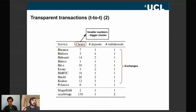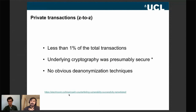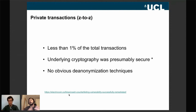Now let's go to the most Zcash-specific part. The most private transactions — those operating entirely within the shielded pool — were less than 1% of total transactions. This is a very important key point: the most private part of Zcash was by far the least used. There are various reasons for this. The underlying cryptography when we did our paper was presumably secure, and we made no effort to break it since this was not a cryptography paper.